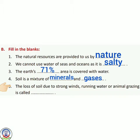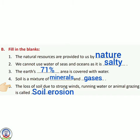Number 5 — the loss of soil due to strong winds, running water or animal grazing is called dash. Strong winds, running water और animal grazing की वजह से जो मिट्टी का नुकसान होता है उसे soil erosion कहते हैं। S-O-I-L E-R-O-S-I-O-N.